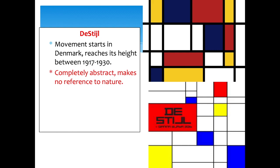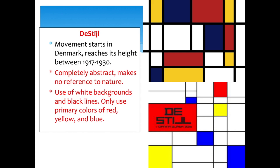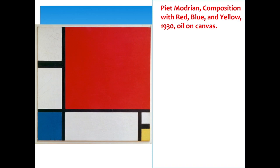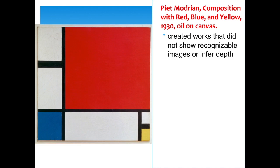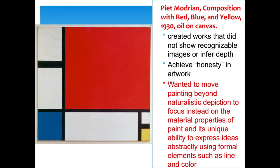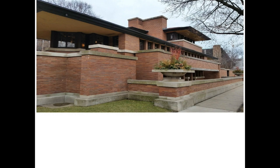De Stijl comes out of the Netherlands and reaches its height from 1917 to 1930. Artists make completely abstract art with no reference to nature or humans — using white backgrounds, black lines, and only primary colors: red, white, and blue. The most famous De Stijl artist is Piet Mondrian, known for Composition with Red, Blue and Yellow painted on canvas. He created works with no recognizable images or inferred depth, wanting to achieve honesty in artwork — moving beyond naturalistic depictions to focus on the material properties of paint and its ability to express ideas abstractly through line and color. Our next video will cover the architecture of the 1900s, beginning with Frank Lloyd Wright and the Prairie Style.